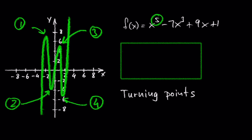In general we can say if a polynomial function has the degree n, then the graph of that function has at most n minus 1 turning points. So the number of turning points is at most one less than the degree of the polynomial function.